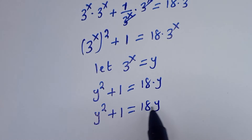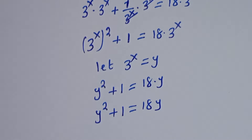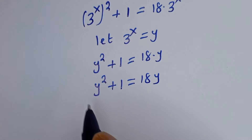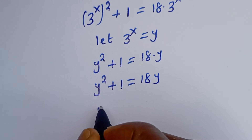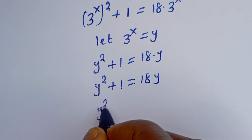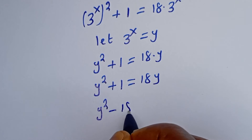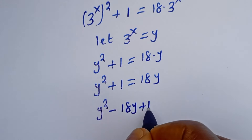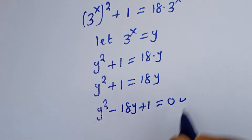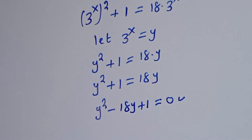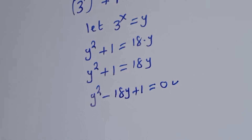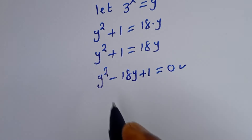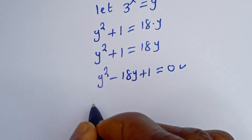Let's bring the 18y to this side. We have y squared minus 18y plus 1 is equal to 0. This is a quadratic equation. Now, let's solve this using the quadratic formula.